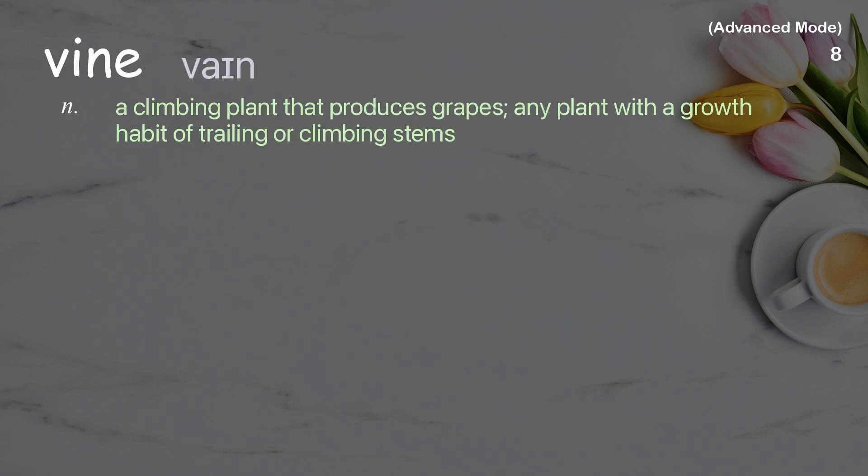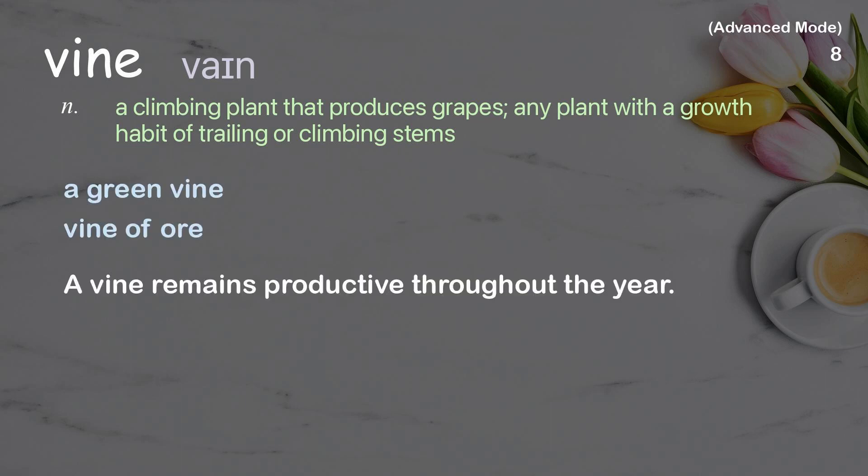Vine. A climbing plant that produces grapes; any plant with a growth habit of trailing or climbing stems. Examples: a green vine, vine of war. A vine remains productive throughout the year.